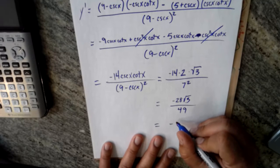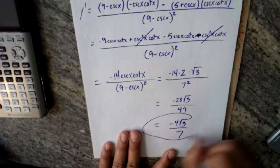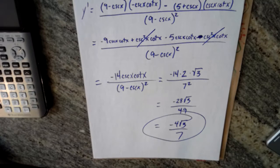Which simplifies to negative four radical three over seven. I hope that helps. BOOM, BOOM!